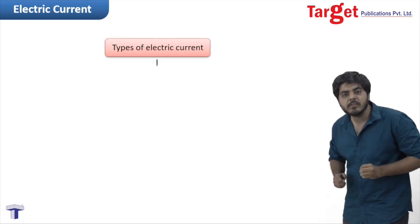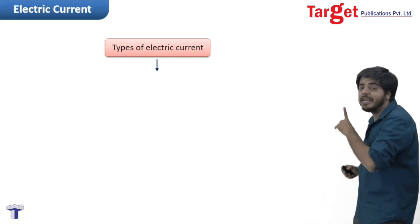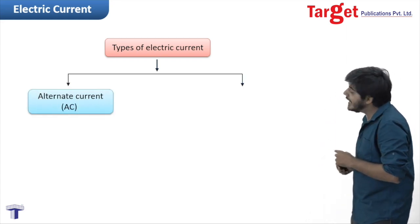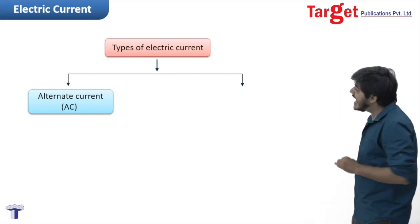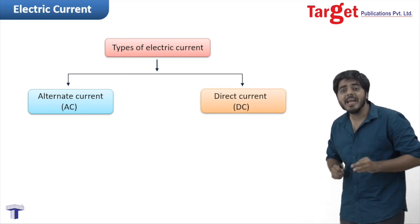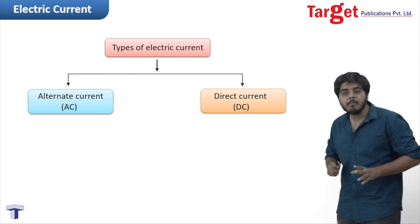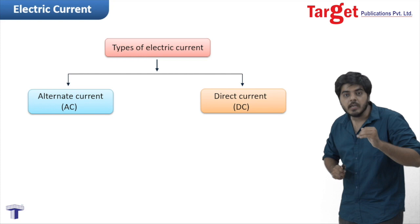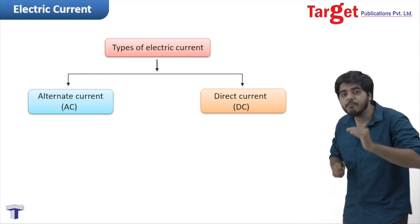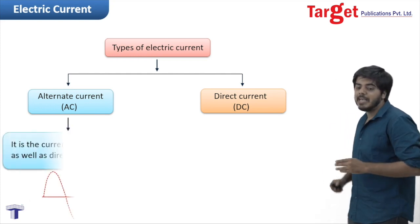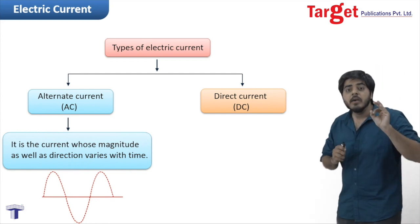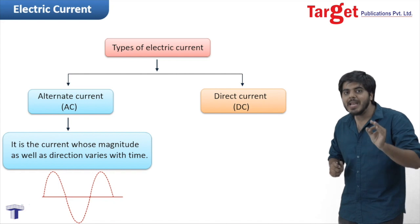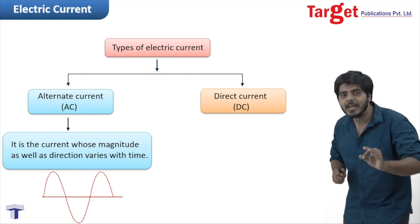Now let us classify electric current. Electric current is classified into two types: the first type is alternating current, that is AC, and the second type is direct current, that is DC. Alternating current can be defined as a current whose magnitude as well as direction changes with respect to time.